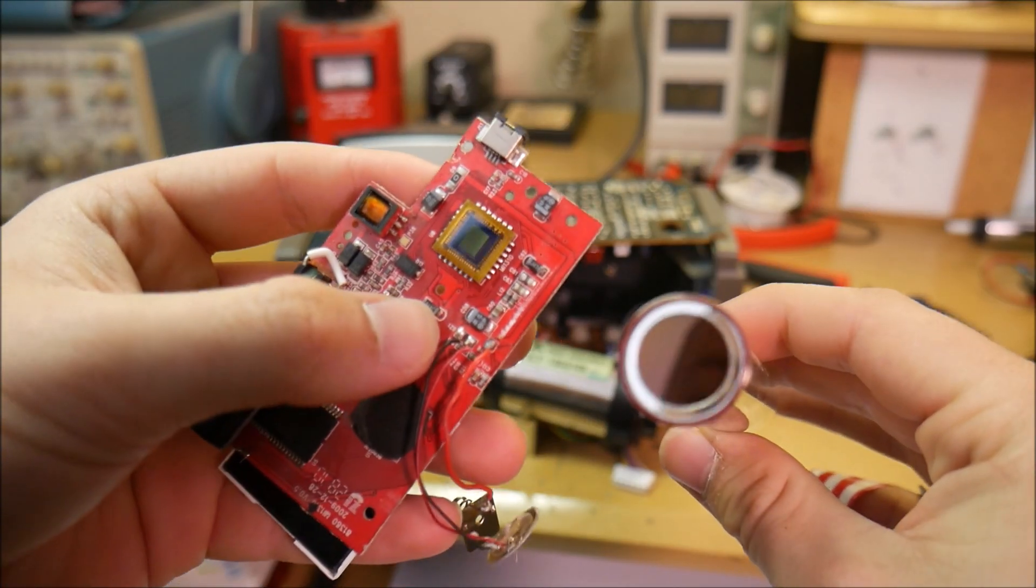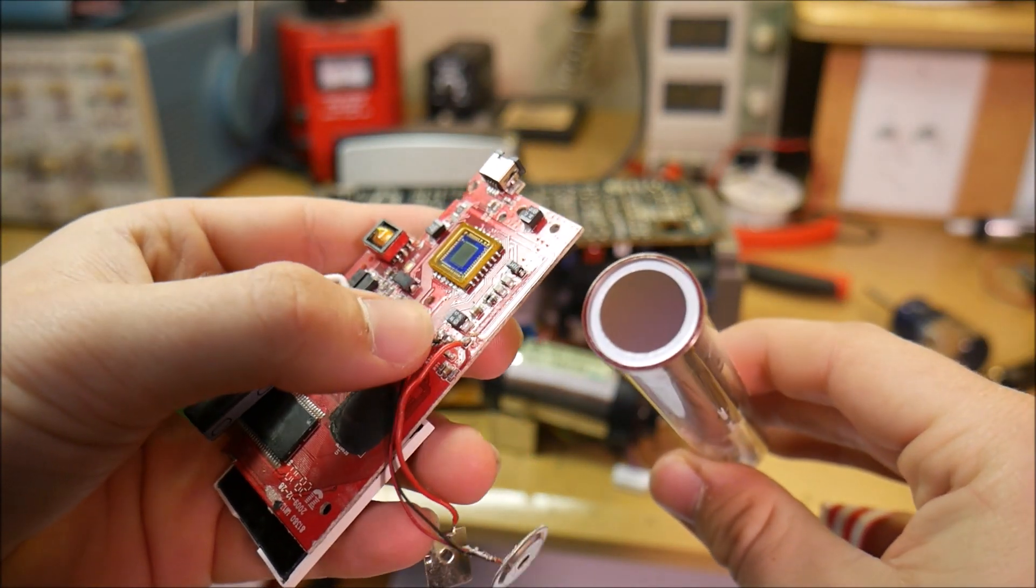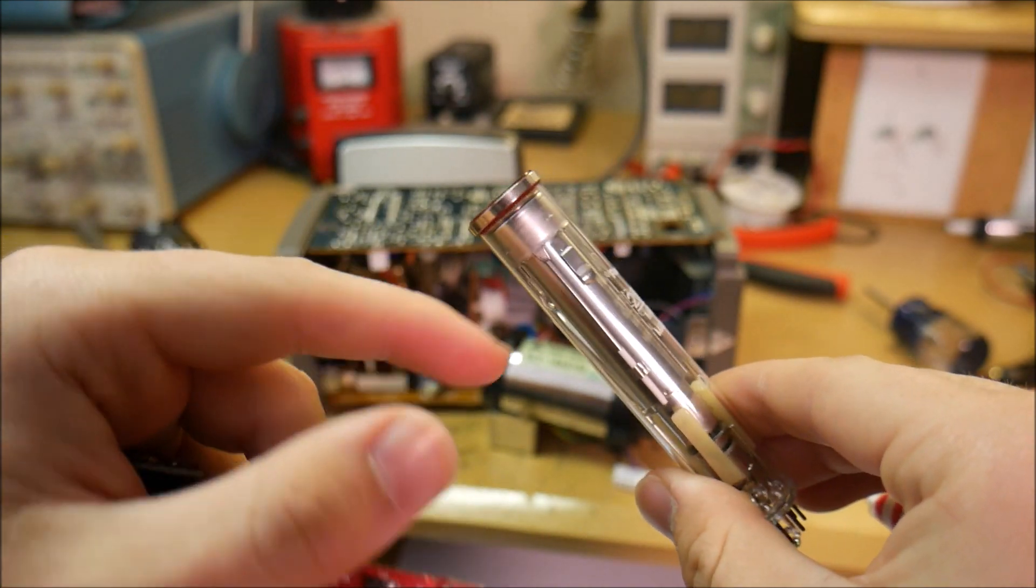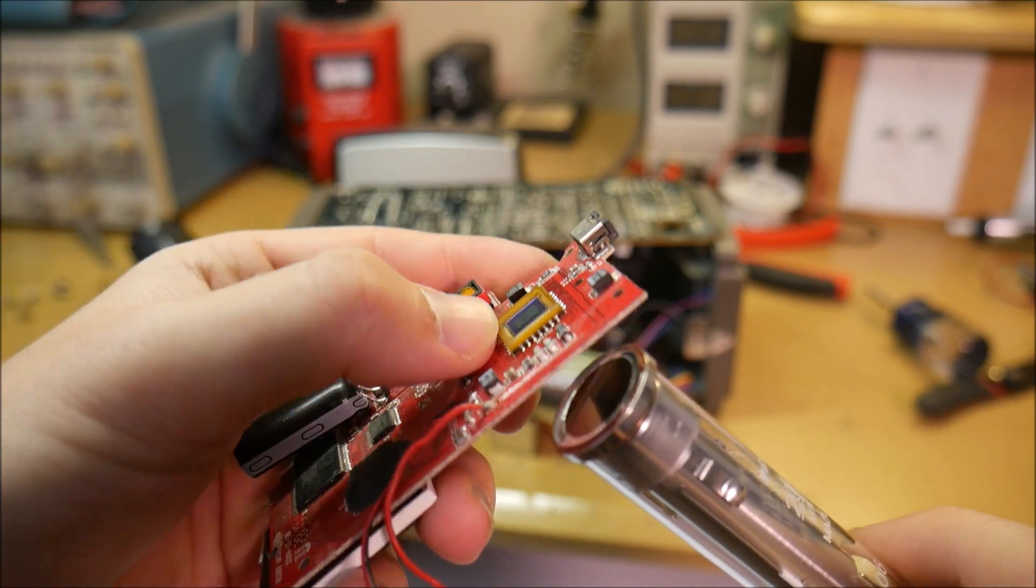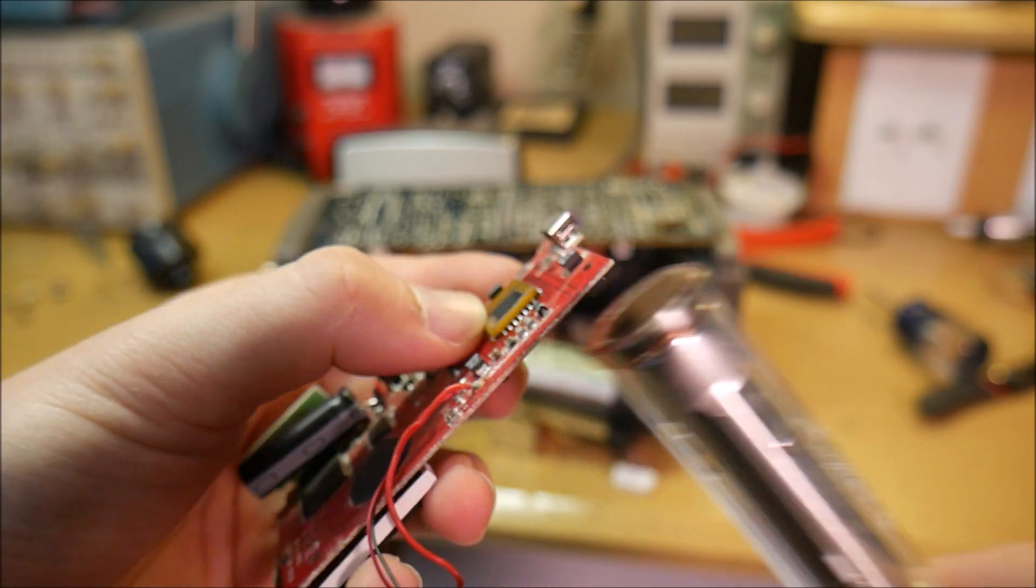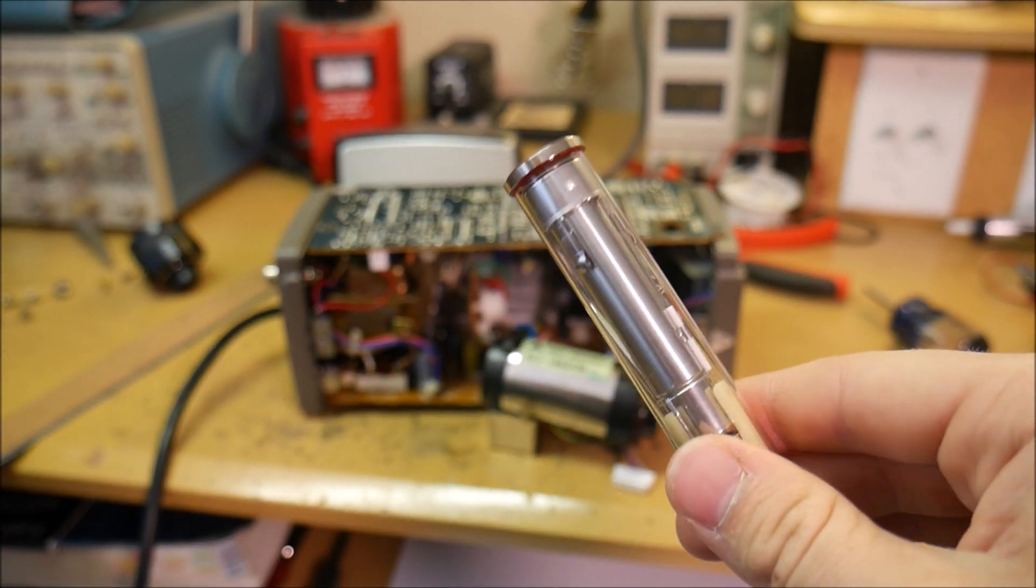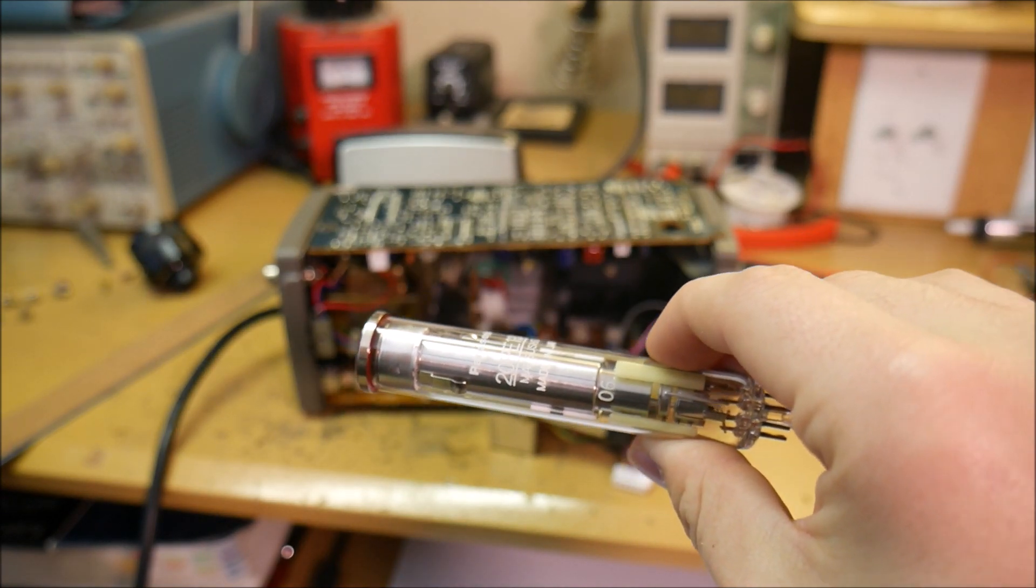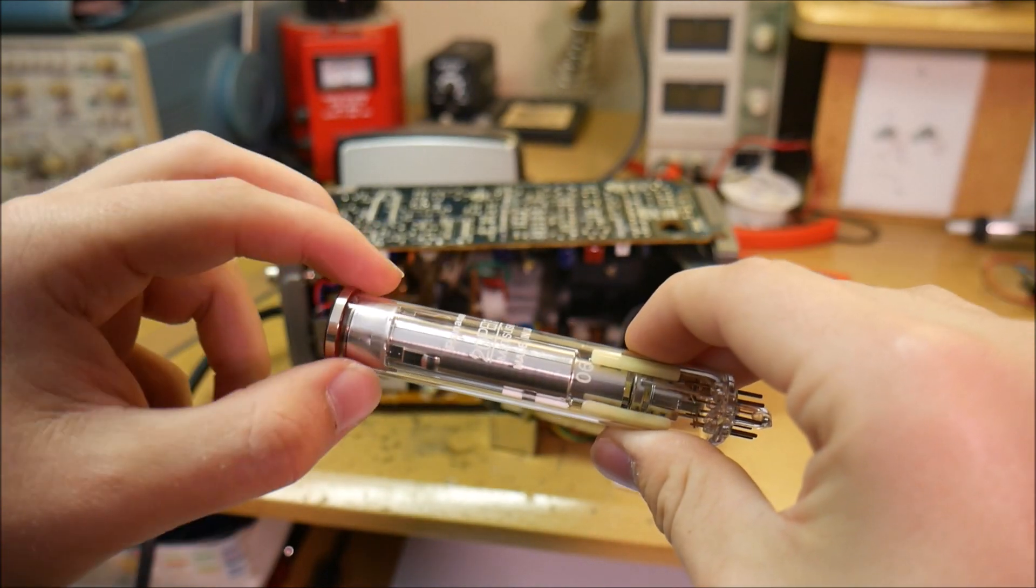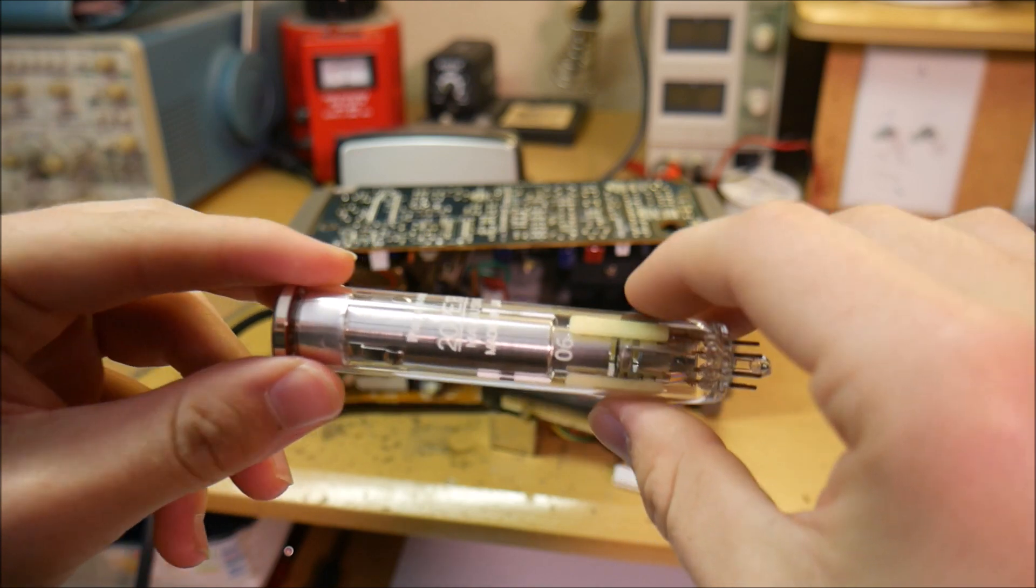Over the years, advances in technology, especially in transistorized technology, has been able to convert something like this into something as small as this, just a fraction of the size. But nevertheless, I still think that the Vidicon tube, the vacuum tube that can convert an image into electricity, is awesome.